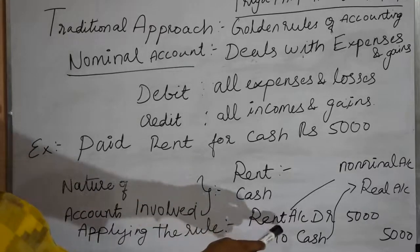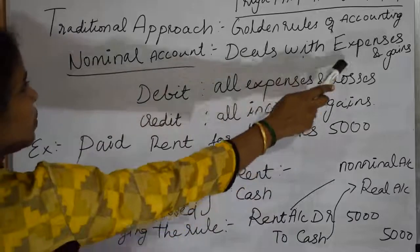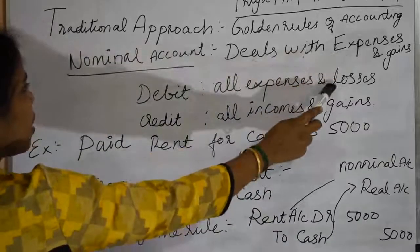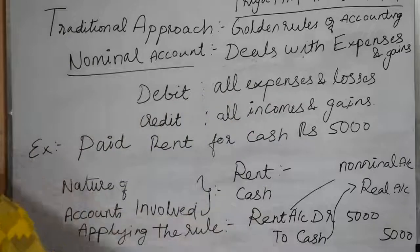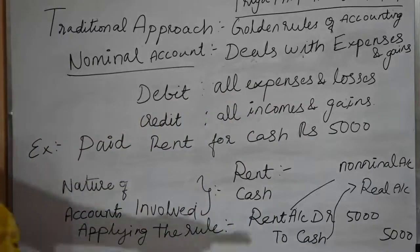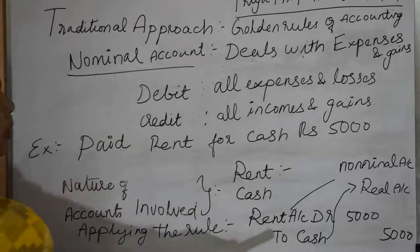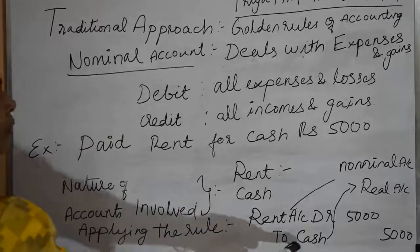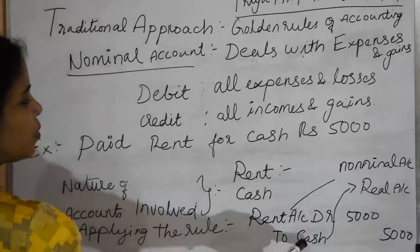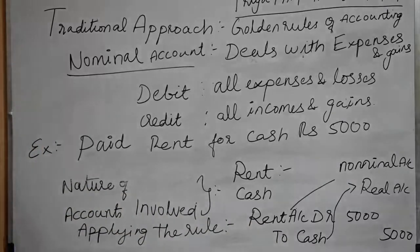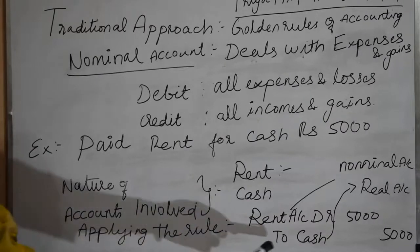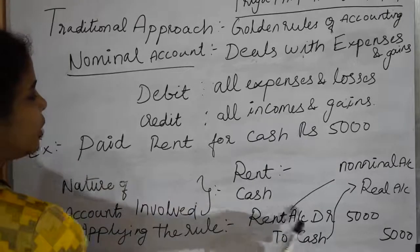Rent is an expense, so we debit all expenses and losses — we debit the rent account. We credit the cash because cash is going out from our pocket. Cash which goes out is credited — that is the real account rule for cash. So the entry is: rent account debit to cash.